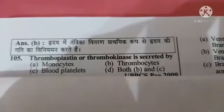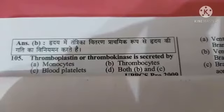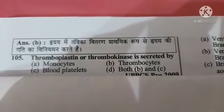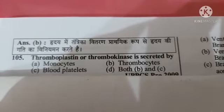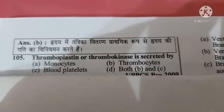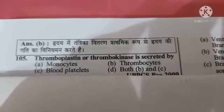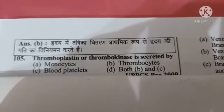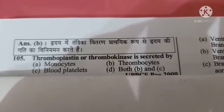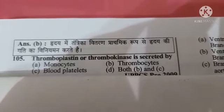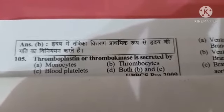Next question: thromboplastin or thrombokinase is secreted by — Option A: monocyte, Option B: thrombocytes, Option C: blood platelets, Option D: both B and C. The correct answer is Option D: both B and C.